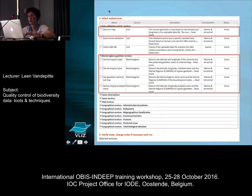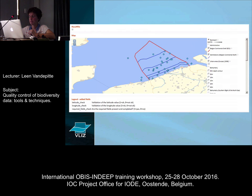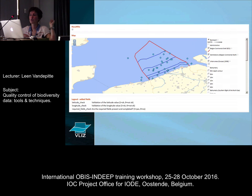Within the web services, if you're on the LifeWatch web service page, 'show on map' is under data validation and QC services — you just tick that box and run it. If someone tells me they have data for the Belgian part of the North Sea and everything is taken within the Belgian EEZ, and I plot the coordinates and I see points outside that area, then I know there's a little issue and certain points need to be looked at in detail.